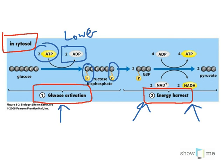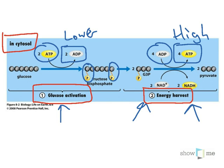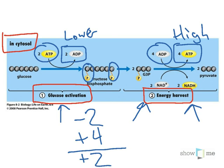This is the point where the cell will actually get some energy out. Here, four ADP molecules are converted into four ATP molecules. ATP is the high energy molecule. So overall, through glycolysis, in the glucose activation step the cell used two ATP — that's minus two. In the energy harvesting step it gained four. So overall, the cell gains a net two ATP. That is where that number comes from.